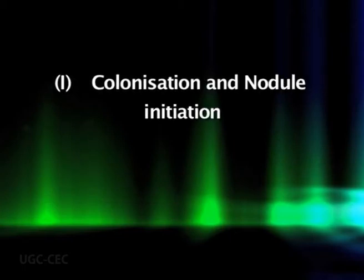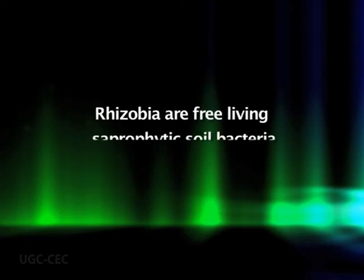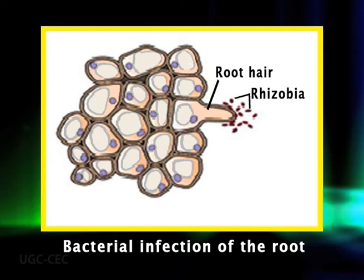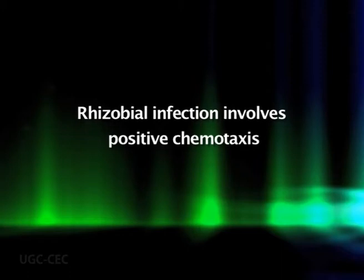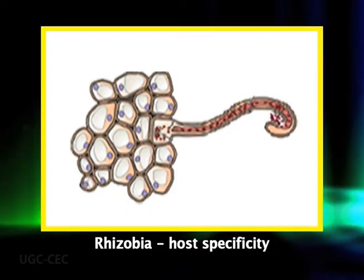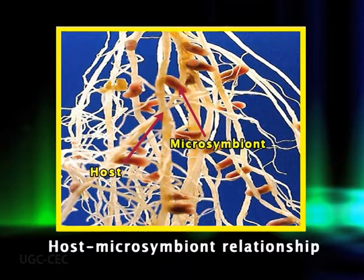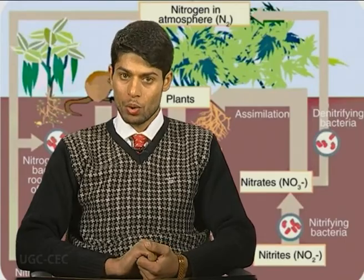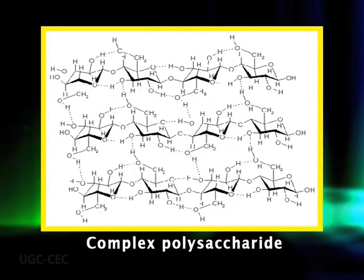Let's first take colonization and nodule initiation. Rhizobia are free-living saprophytic soil bacteria. The initial attraction of rhizobia to host roots appears to involve positive chemotaxis — movement towards a chemical. Rhizobia host specificity is determined when the rhizobia attach to the root hairs and must involve some form of recognition between cells involving chemical linkages that form between unique molecules on cell surfaces. In the case of rhizobia-host interactions, recognition appears to involve two classes of molecules: lectins and complex polysaccharides.